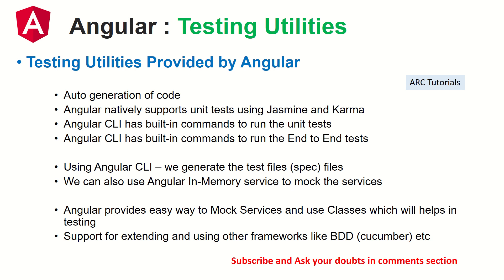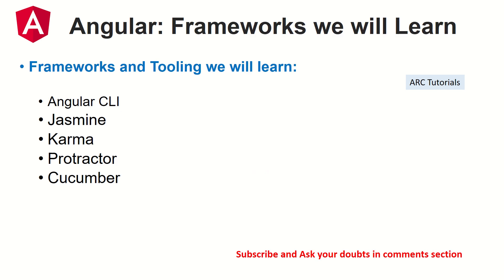Angular also provides an easy way to do mock services by using classes and injecting data. You can extend testing using other BDD frameworks like Cucumber and Jest. In this series, we will first cover all the testing utilities provided by Angular CLI, then start writing test scripts in Jasmine — starting with basic components and growing from there — covering services, modules, routing, pipes, directives, data binding, interpolation, and much more. Then we'll start learning Cucumber and Gherkin for end-to-end testing.